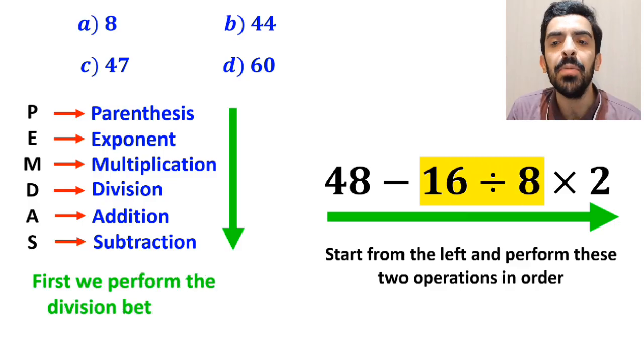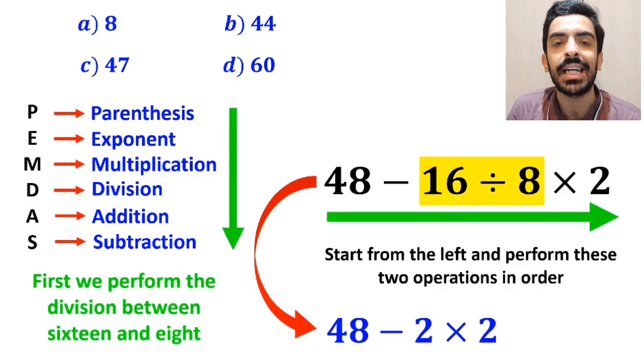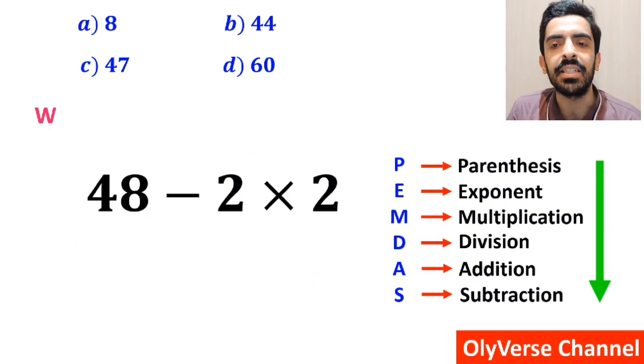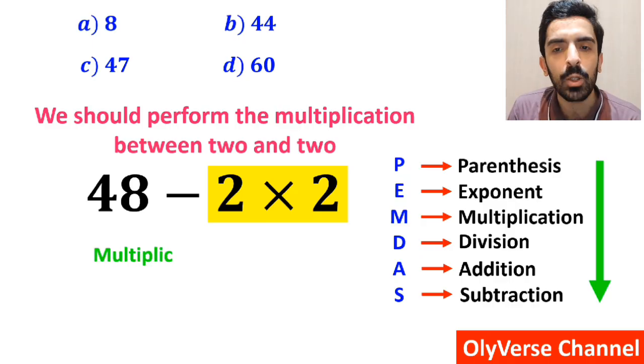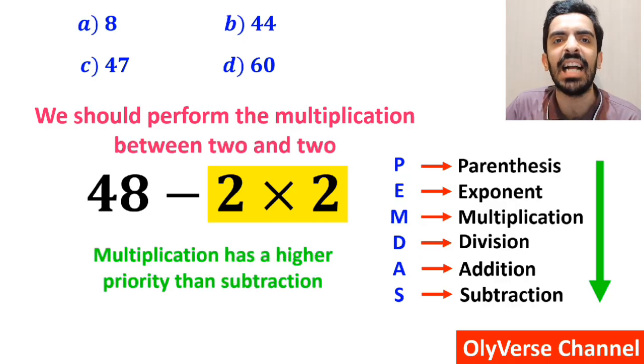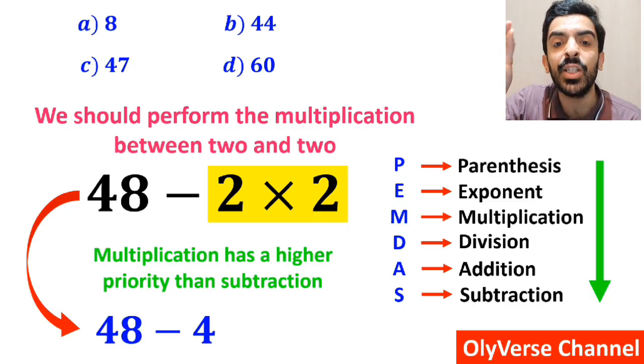So first we perform the division between 16 and 8, and instead of the original expression, we can write 48 minus 2 times 2. In the next step, we should perform the multiplication between 2 and 2, because multiplication has a higher priority than subtraction. So this expression simplifies to 48 minus 4.